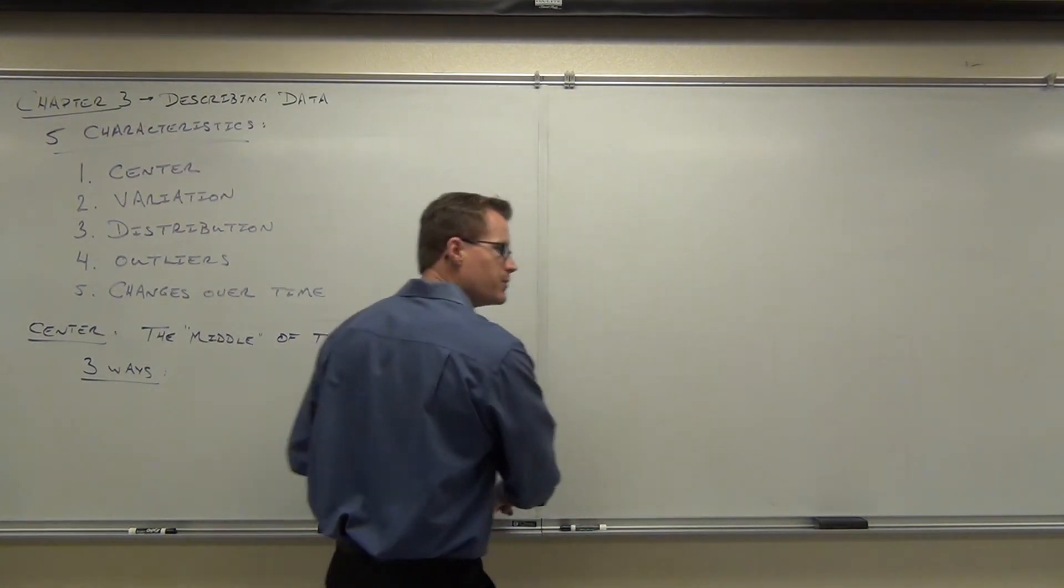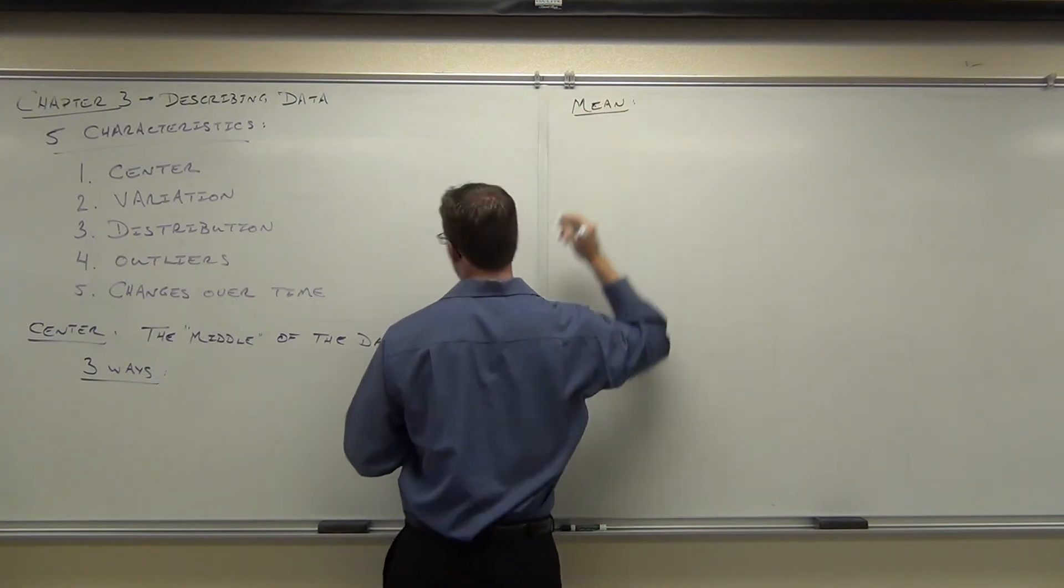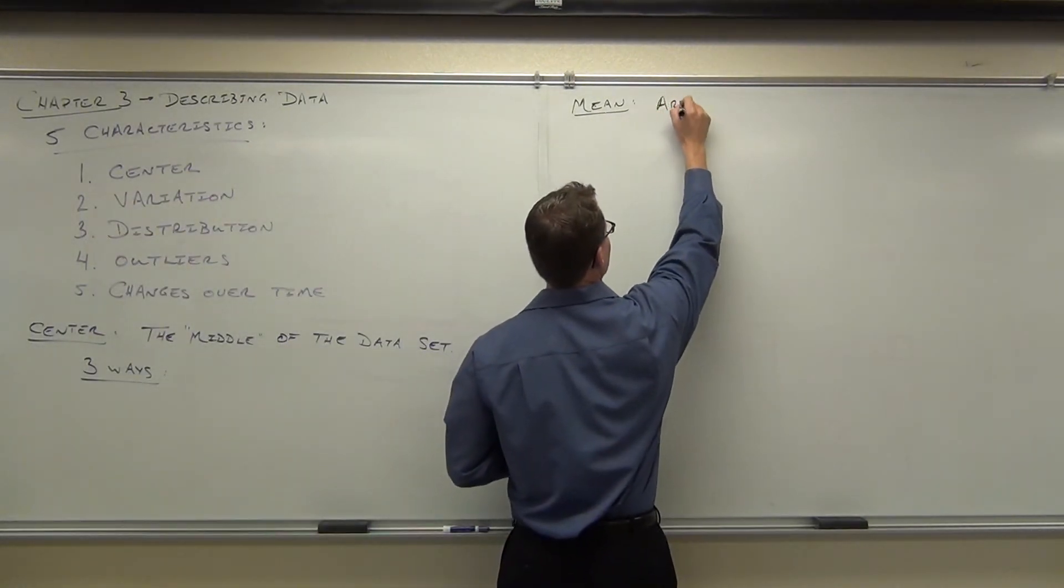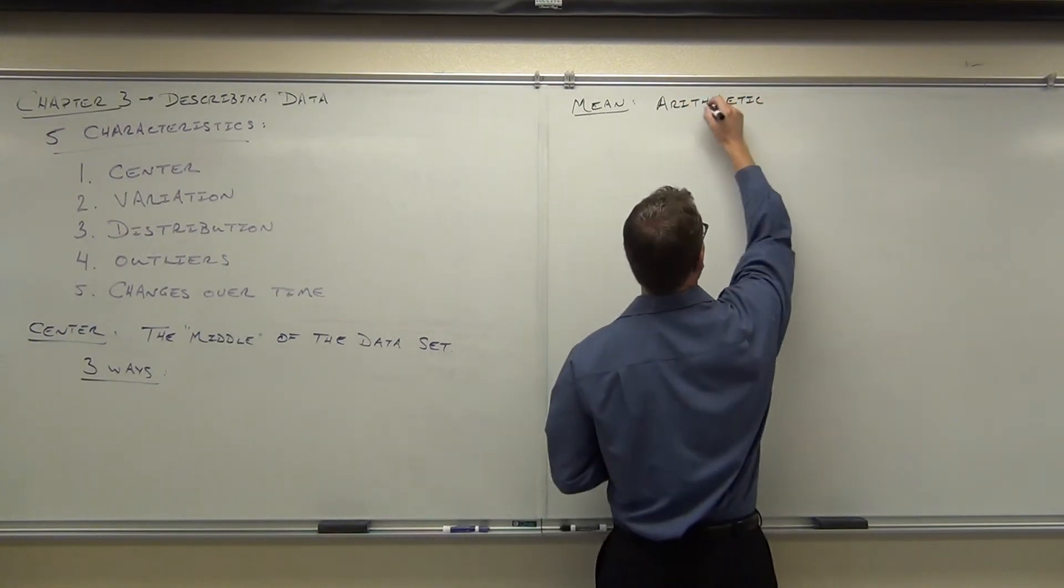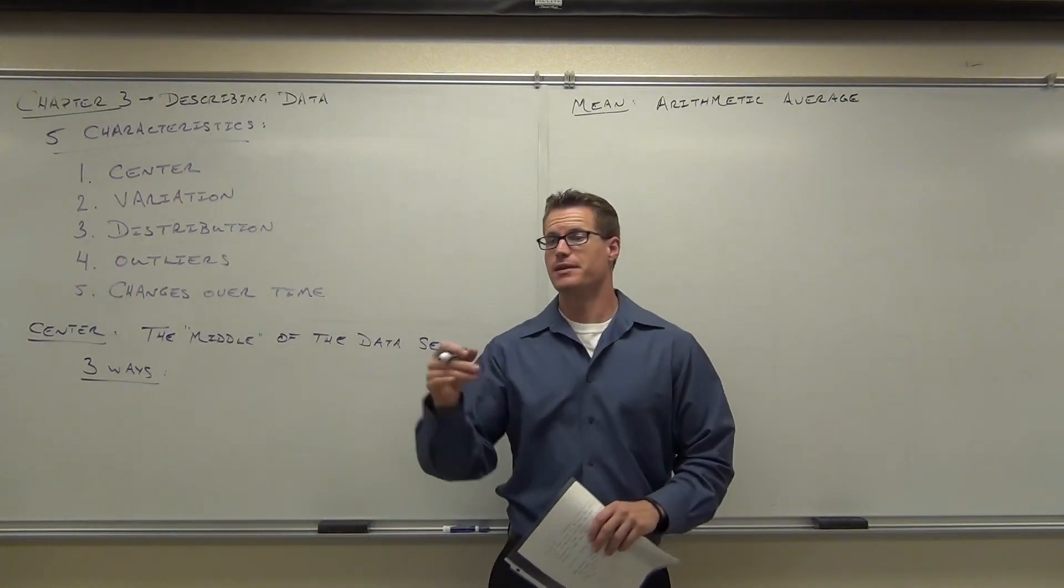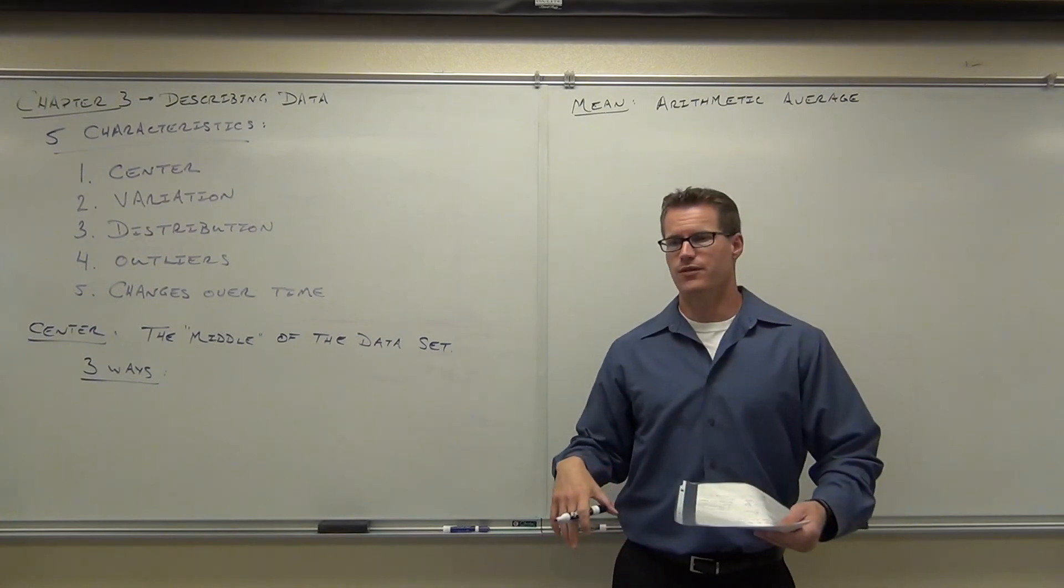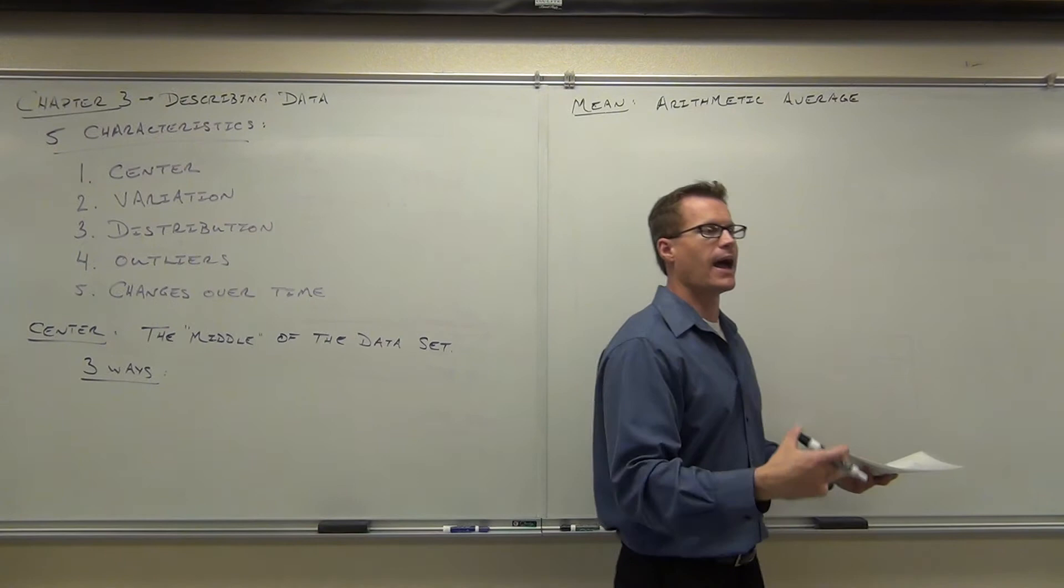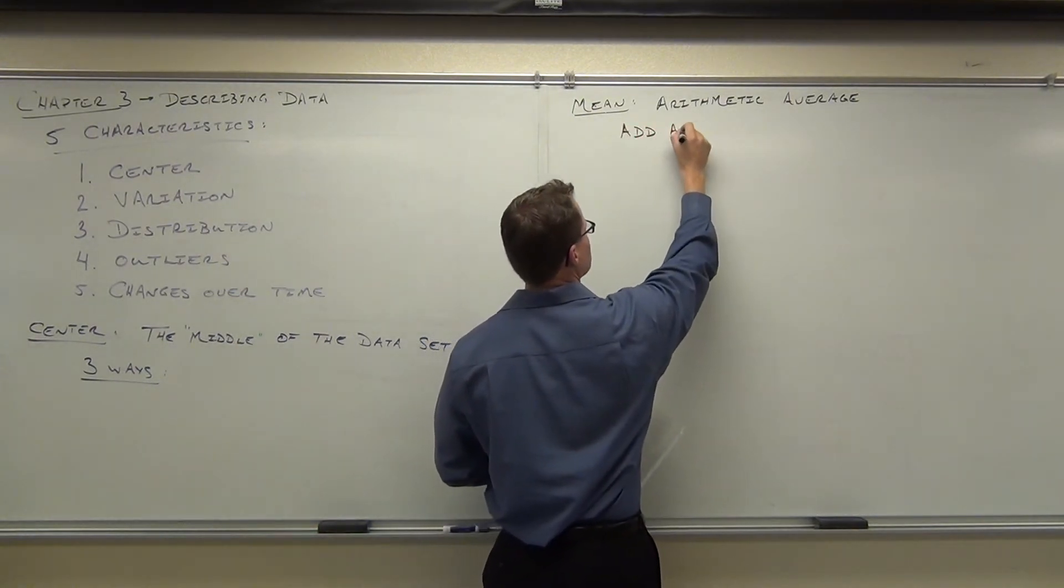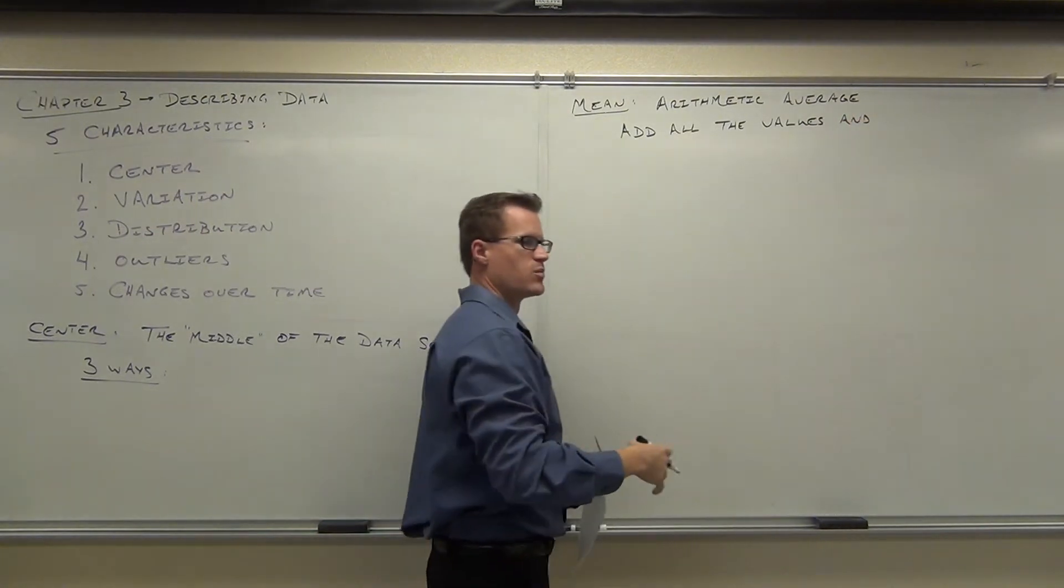When we say center, we could be talking about the mean. And we're going to be using the mean quite a bit in this class. What we mean by the mean is the arithmetic average. Basically you add up all the things, you divide by the number of things you added. We add everyone's age together and we divide by how many people we're in here right now.